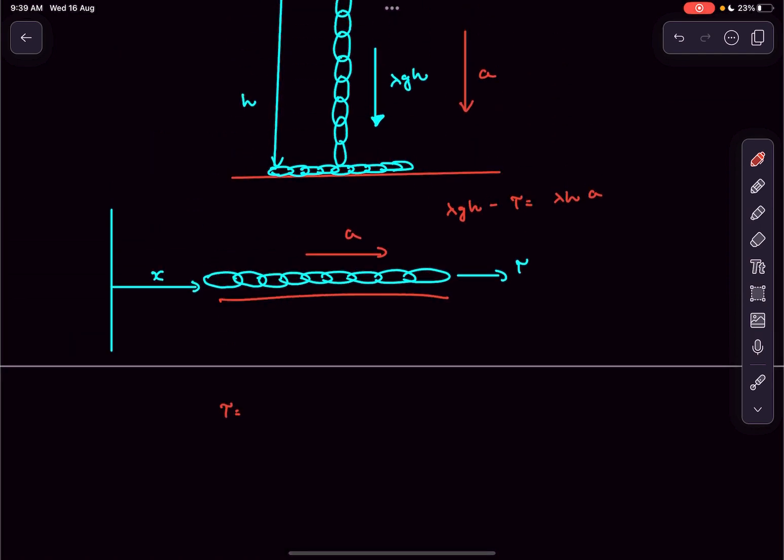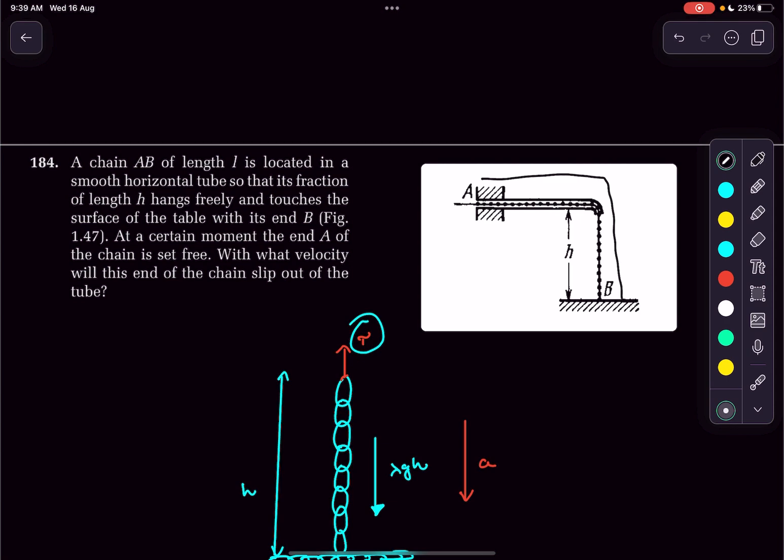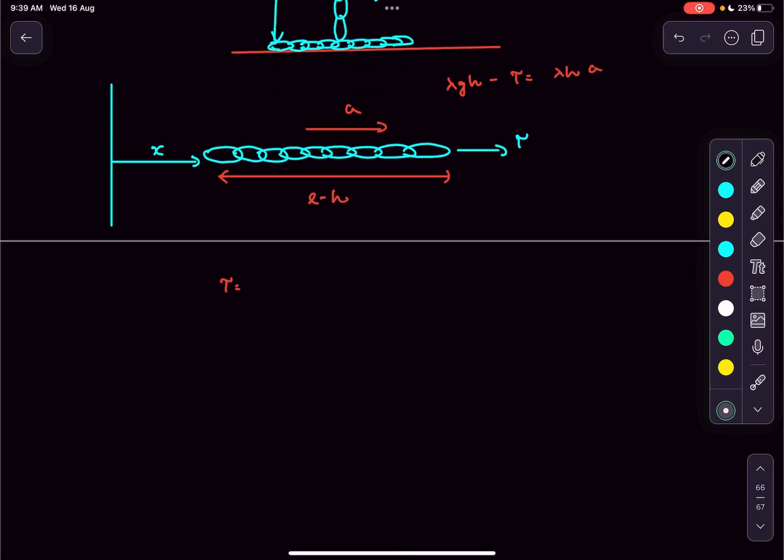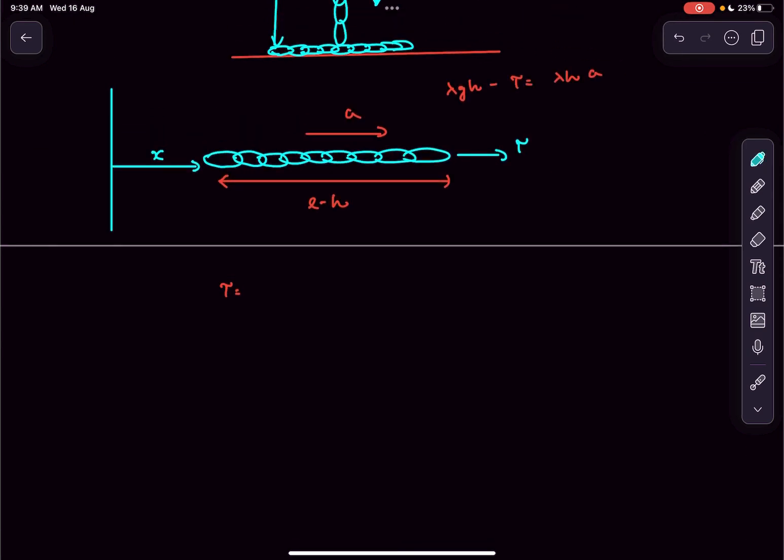What is the length of this part of the chain? Initially, it was l - h, because l is the total length and we subtract h. After some time, as the chain moves right by amount x, it becomes l - h - x. The tension is T = λ(l - h - x) × a.